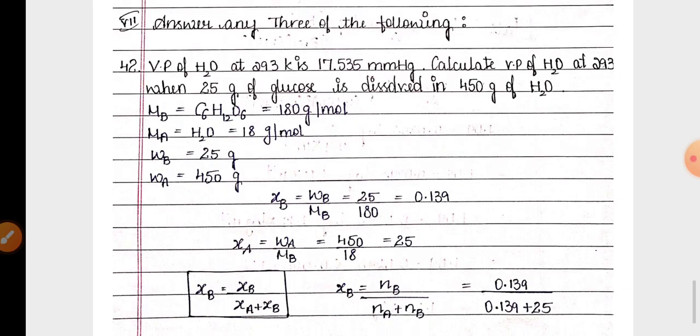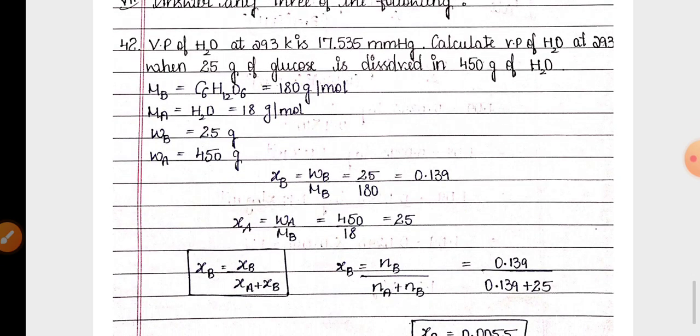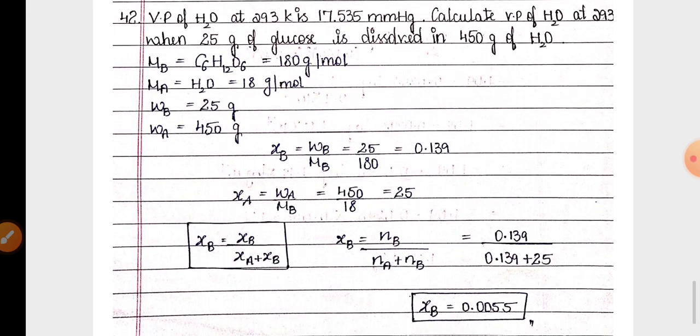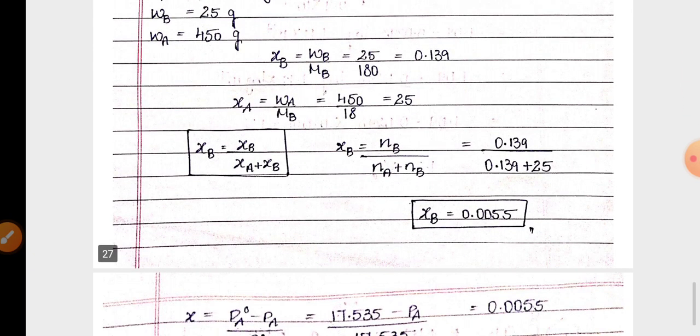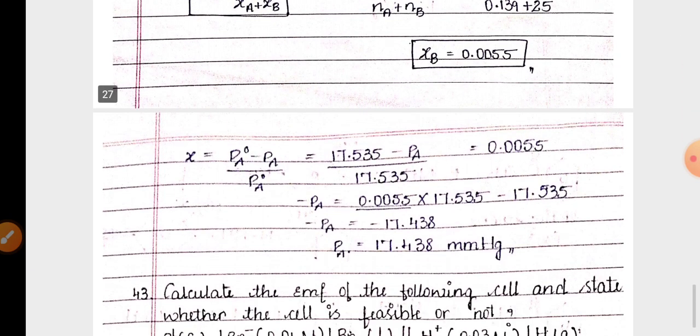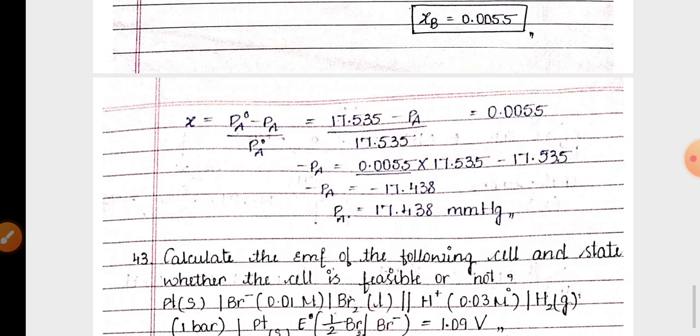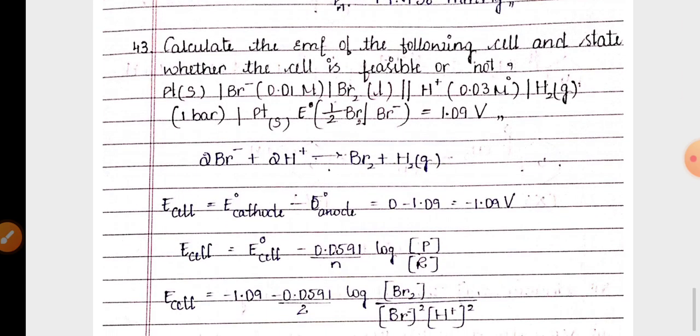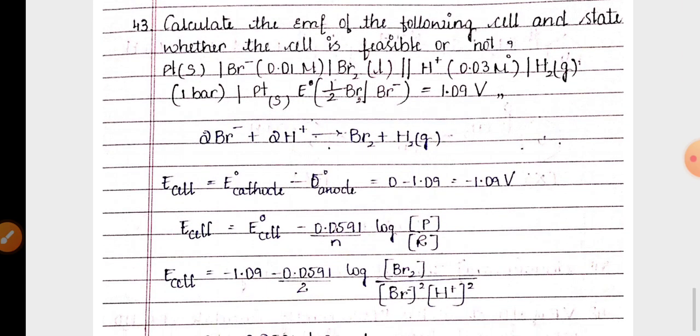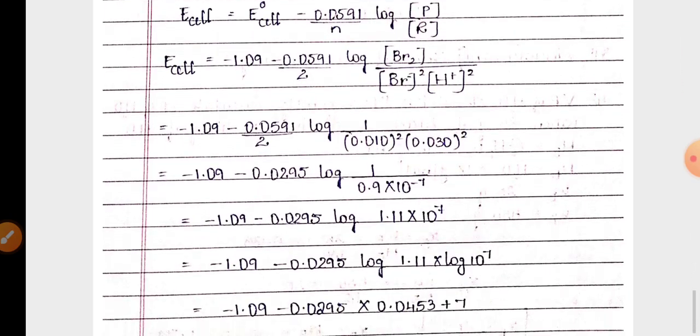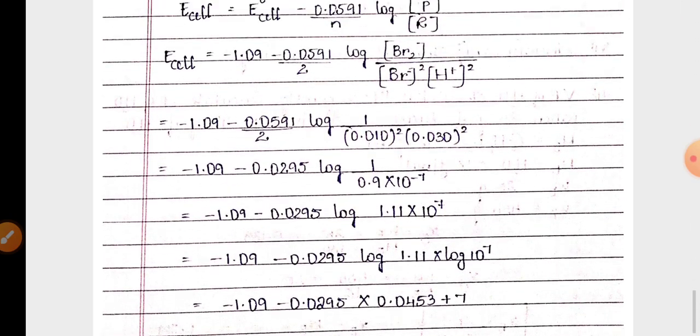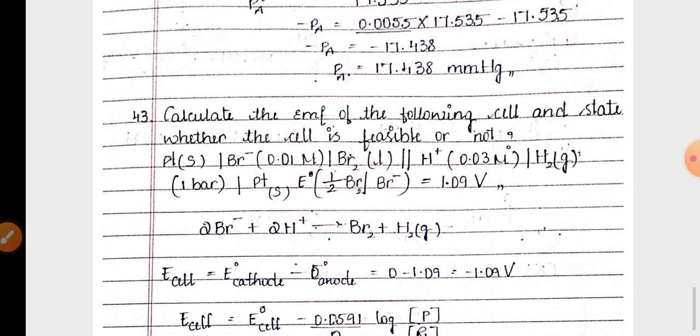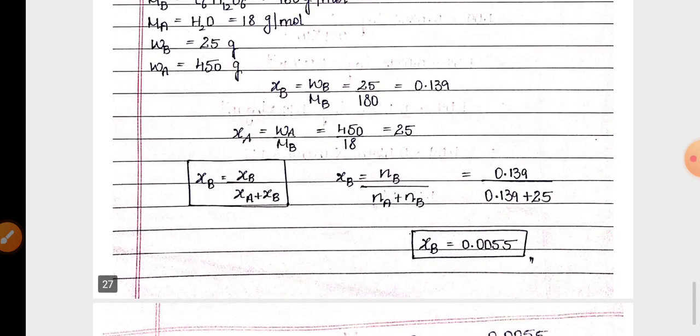Part E has numericals related to solution chapter about mole fraction and relative lowering of vapor pressure, EMF of the cell from electrochemistry chapter. So these are the solutions of three chemistry model papers.